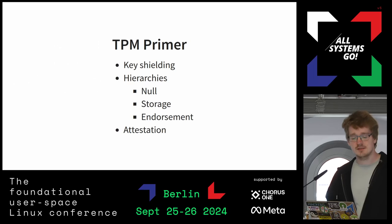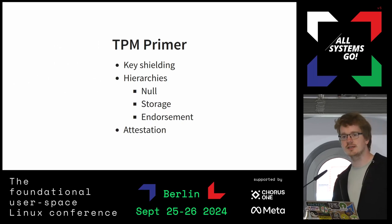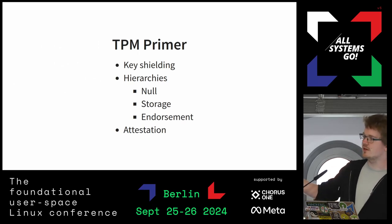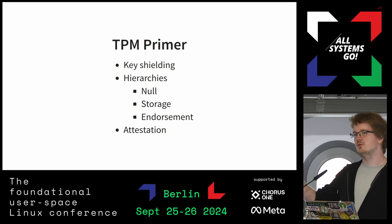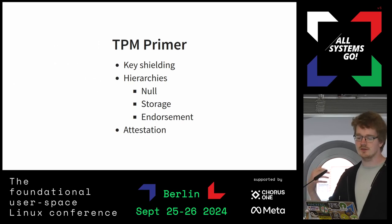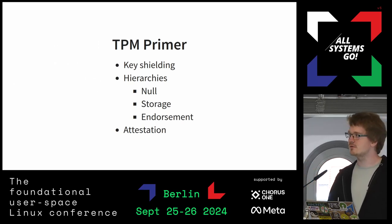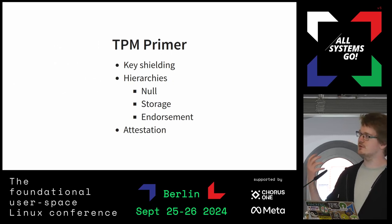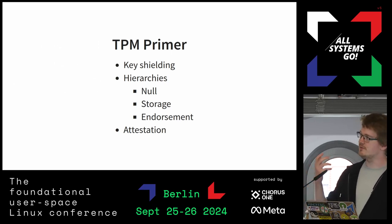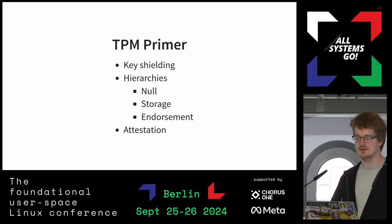The TPM has three hierarchies. The null hierarchy is session-based — every time you start up, you get a random seed, and everything created during that session gets deleted or rotated on the next boot. You have a storage key for the lifetime of the owner, where all application keys go. And then there's the endorsement hierarchy, which is for the lifetime of the device — that's what we care about, because it's how we can uniquely identify devices. We also care about attestation features, so the TPM can sign what was created on the device and give us proofs it was created on the TPM.